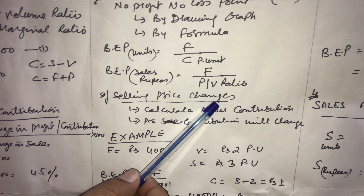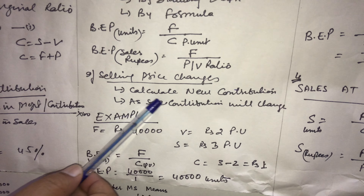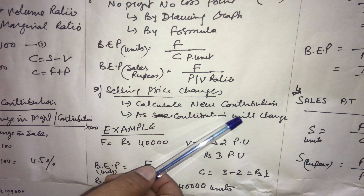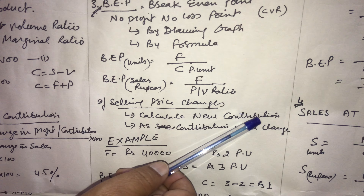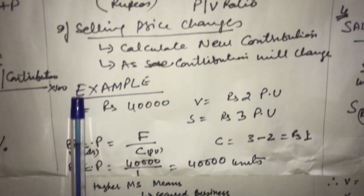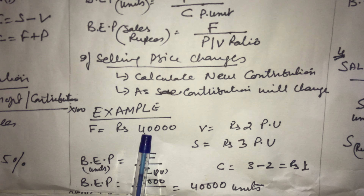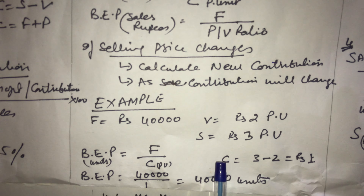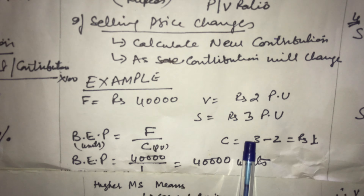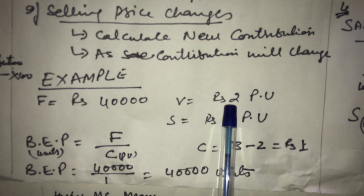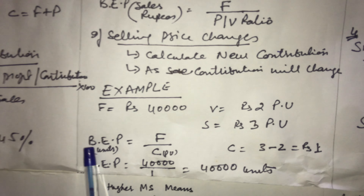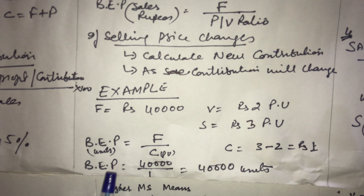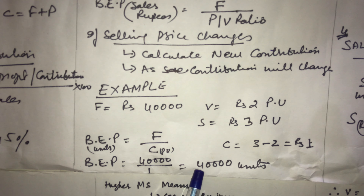If selling price changes, we need to calculate the new contribution, because a change in sales results in a change in contribution. For example: fixed cost is Rs 40,000, variable cost is Rs 2 per unit, and selling price is Rs 3 per unit. Contribution equals S minus V: 3 minus 2 equals Rs 1. Breakeven point in units equals fixed cost upon contribution per unit: 40,000 divided by 1 equals 40,000 units.